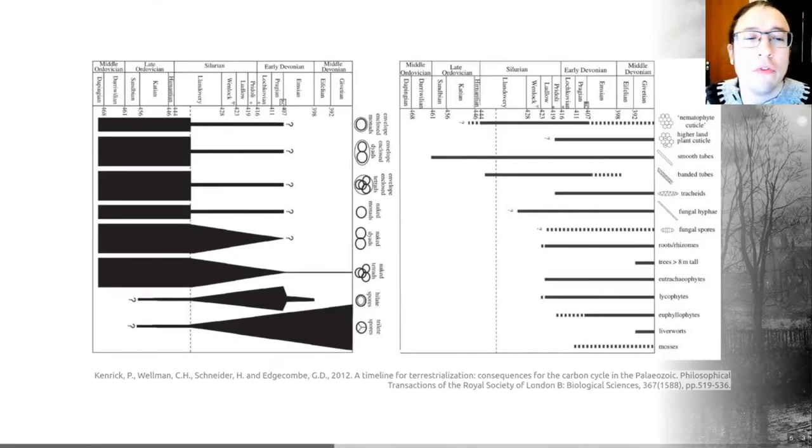The earliest evidence for more complex life on land is found in the form of land plant spores in the Ordovician. It's shown nicely or summarized very nicely both in terms of the reproductive structures we see in plants and in terms of the structures that we actually see in fossils themselves in these two diagrams taken from a paper by Kenrick et al. in 2012.